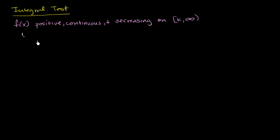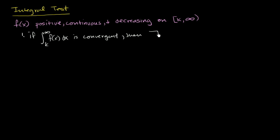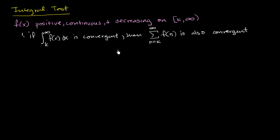The first statement: if the improper integral from k to infinity of f of x dx is convergent, then the infinite series from n equals k to infinity of f of n is also convergent. This is actually the case that we saw when we looked at one over n squared.